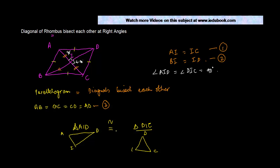And you must be wondering, why am I doing this? We know that AC is a straight line. Accordingly, angle AID and angle DIC form a linear pair.